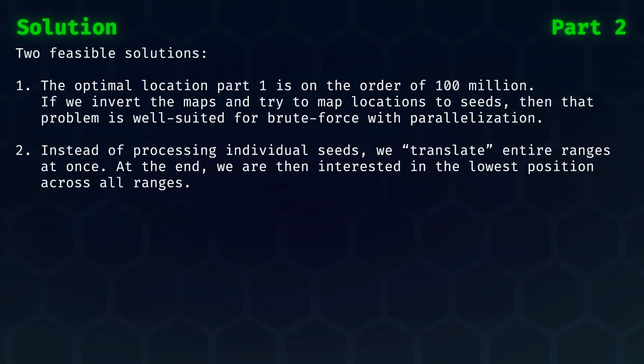Depending on the hardware available to you, I would consider two solutions feasible. The first one is to make use of the fact that the optimal location of part 1 is on the order of 100 million. This gives us an indication of how large the minimal position can be for part 2. So, if we invert the maps and try to map locations to seeds instead, then that problem is well suited for a brute force approach with parallelization.